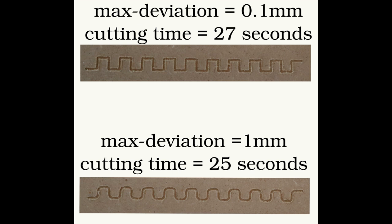Here are two cuts resulting from the same square wave program. The top cut limits the deviation to 0.1 millimeters and completes in 27 seconds. The bottom cut allows deviation of up to 1 millimeter and completes in 25 seconds. The default value is 0.1 millimeters and works for most applications.